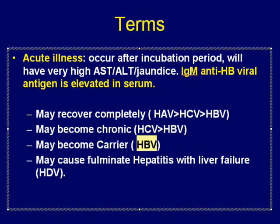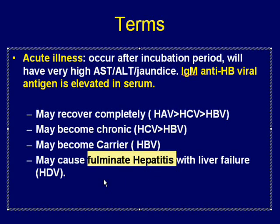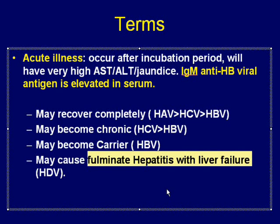A fourth important outcome of acute illness is that some cases may produce fulminant hepatitis with liver failure. As the name suggests, this is the most severe form of disease and can kill the patient. Fulminant hepatitis is so severe and progresses so quickly that it leads to liver failure. In these patients, you get a combination of biochemical findings of acute hepatitis and findings of liver failure.